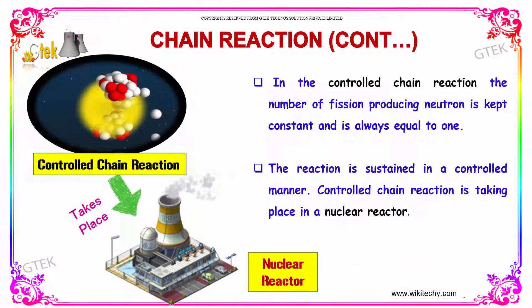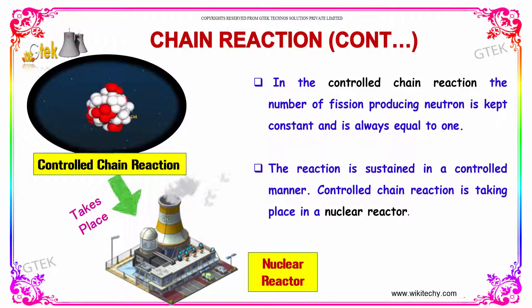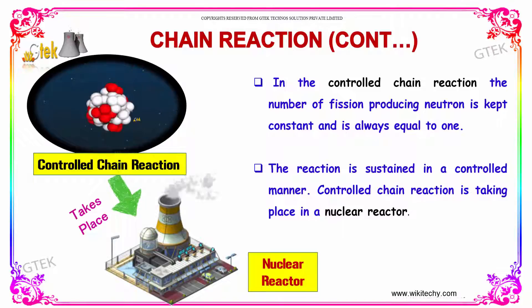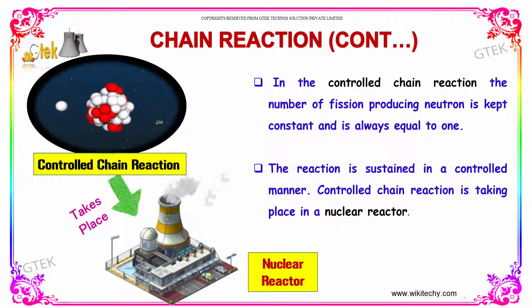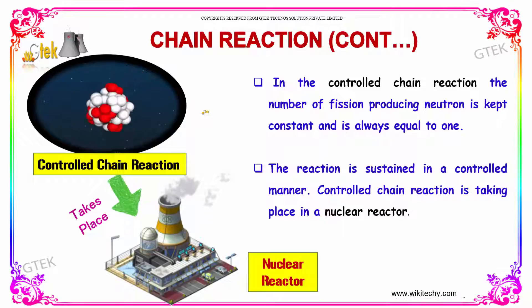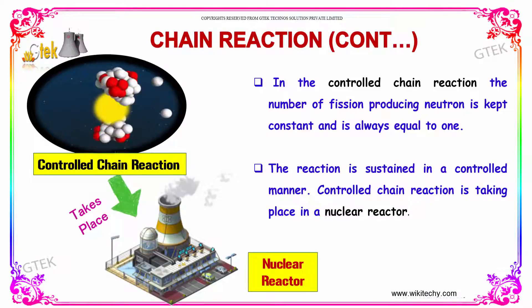Over here, you are able to see the controlled chain reaction. The number of fissions producing a neutron is kept constant and is always equal to one. The reaction is sustained in a controlled manner. The controlled chain reaction takes place in nuclear reactors.